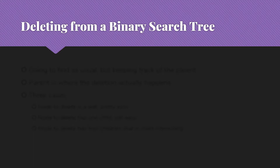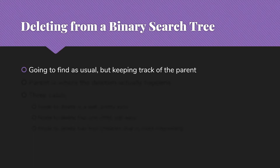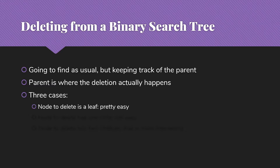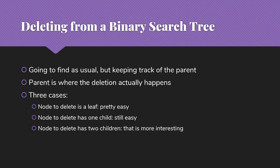The third operation we were interested in was deletion. Here we're again going to find the node, as with find and insert, but we need to keep track of the parent, because the parent is where the deletion will actually happen. We have three different cases. One is that the node to delete is a leaf — pretty straightforward. The next is that the node to delete has one child — still pretty easy. The third is that the node to delete has two children, which is a little more interesting and requires us to do some work with the tree structure.